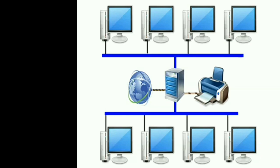A node can be a computer, printer, server, router, or any other device capable of sharing data — sharing means sending and receiving data. Nodes are connected through links, which carry the information. In a computer network there are two types of links: the first is a wired link and the second is a wireless link, both of which will be discussed later.